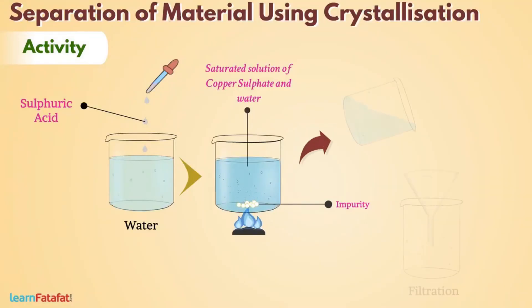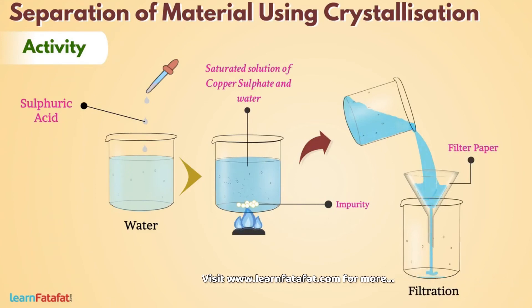Now filter the solution with the help of filter paper. The impurity remains on filter paper and gets separated from copper sulphate solution.